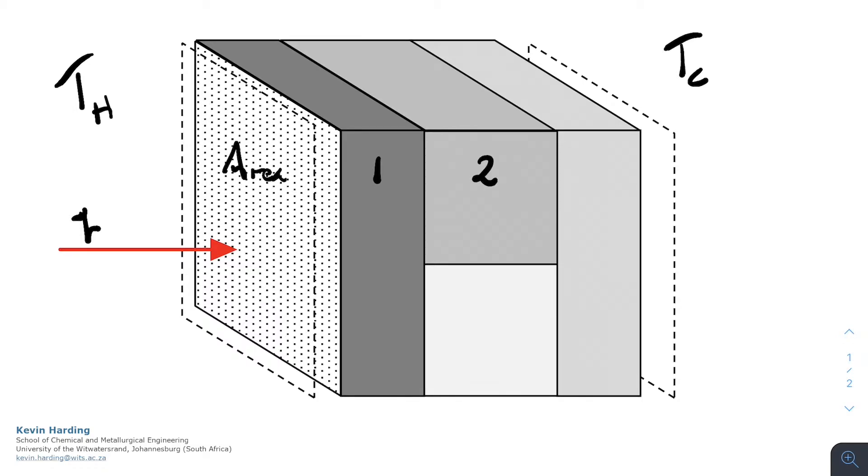It's going to flow through slab two and slab three that are parallel sections, slab four and out through the convective layer on the right hand side.